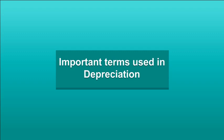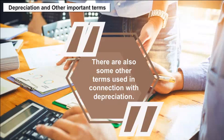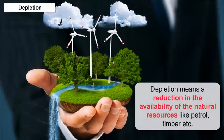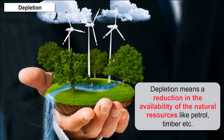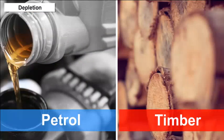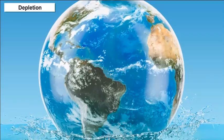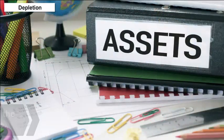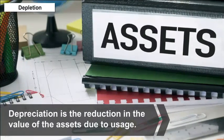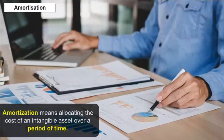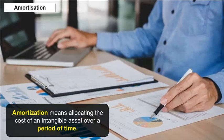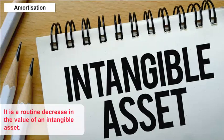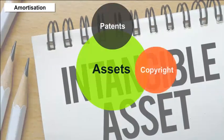Important Terms Used in Depreciation: Depletion means a reduction in the availability of natural resources like petrol and timber. The difference between depletion and depreciation is that depletion is the reduction of natural resources, whereas depreciation is the reduction in the value of assets due to usage. Amortization means allocating the cost of an intangible asset over a period of time — it is a routine decrease in the value of intangible assets like patents, copyrights, trademarks, and franchises.